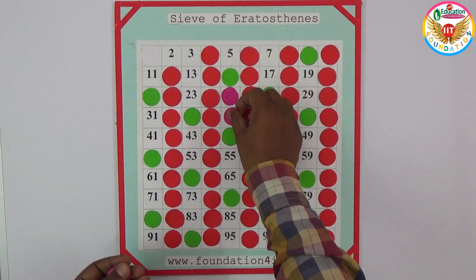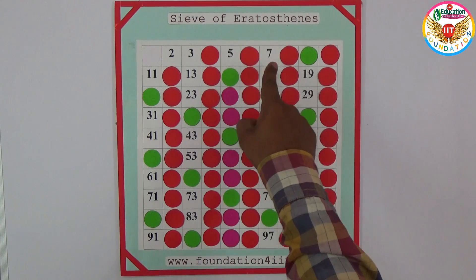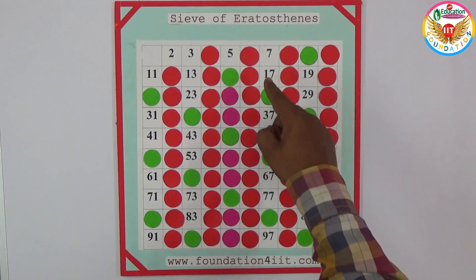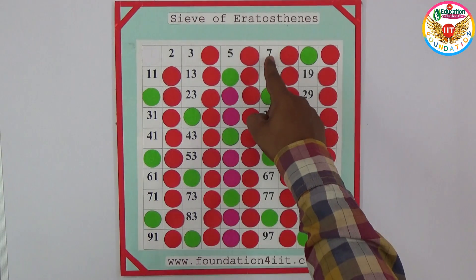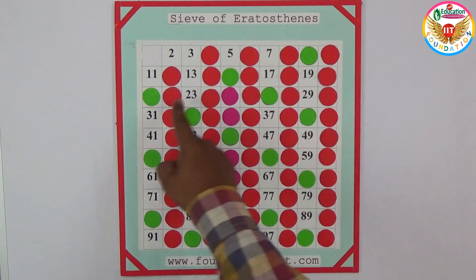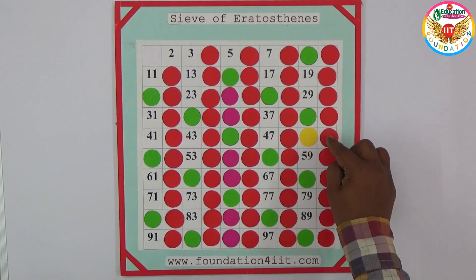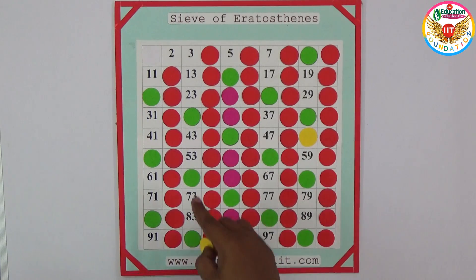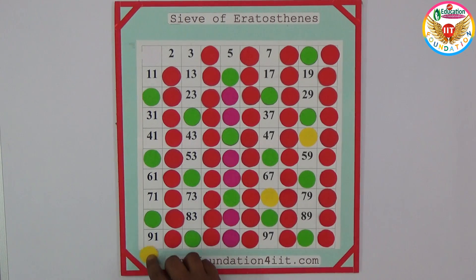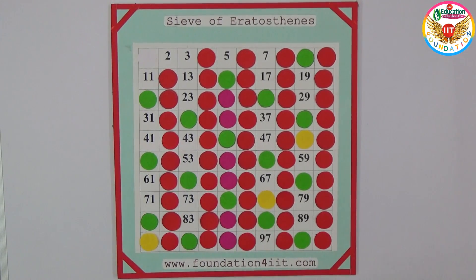Continuing to cover multiples of 5, including 35. Next is 7 — 7 is a prime number and its multiples are not prime. The first multiple of 7 is 14, already closed. After 14, next is 21, also already closed. The multiples of 7 not yet covered — including 77 and 91 — are being covered now.